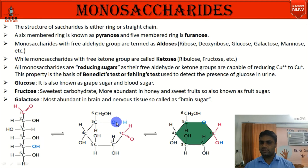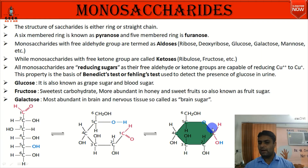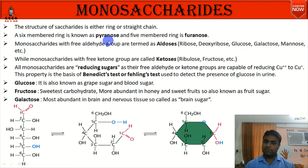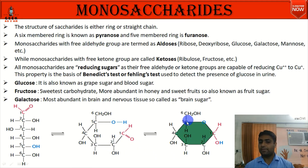In ring formation, the OH on the fifth carbon forms a bond with the aldehyde group on the first carbon. The sixth carbon's CH2OH remains outside. If the ring is a six-member ring, it is called pyranose. If it is a five-member ring, it is called furanose.